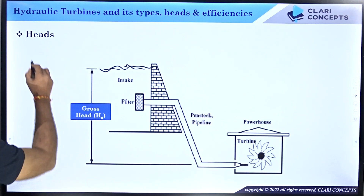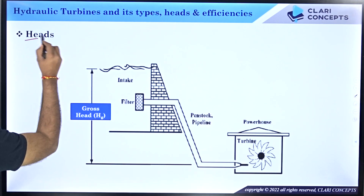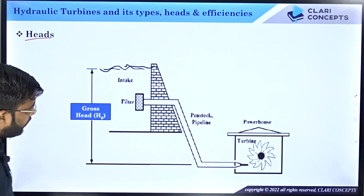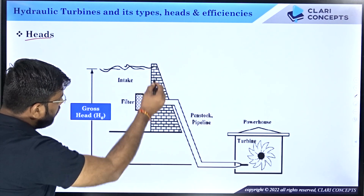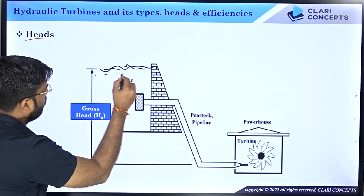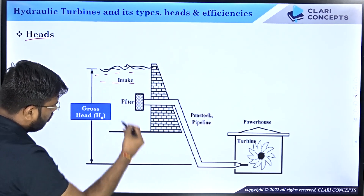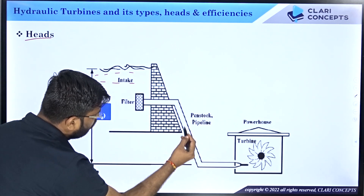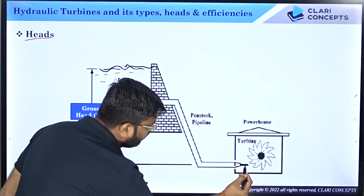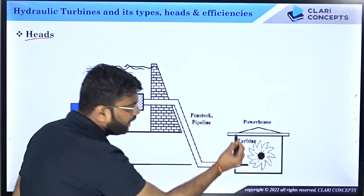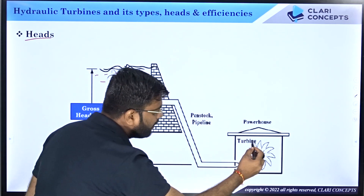First of all, we have to talk about the heads — what are the types of heads and what is the terminology. This is the dam, here is the water in the reservoir, and here is the penstock through which water flows, and here is the turbine.